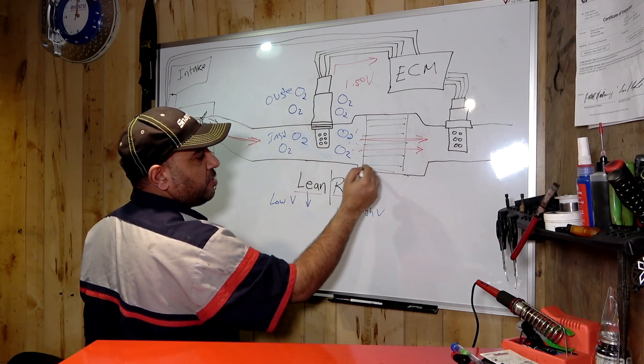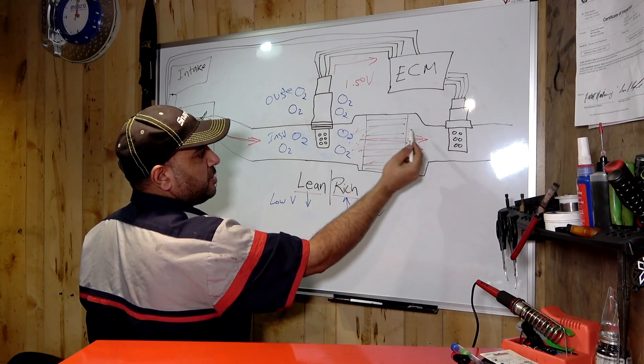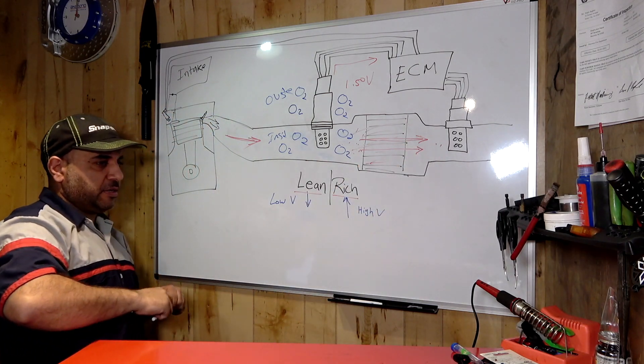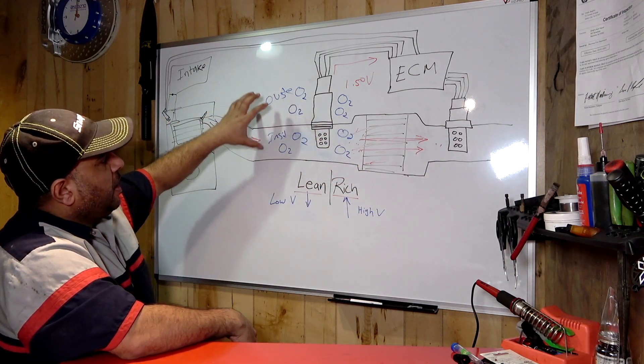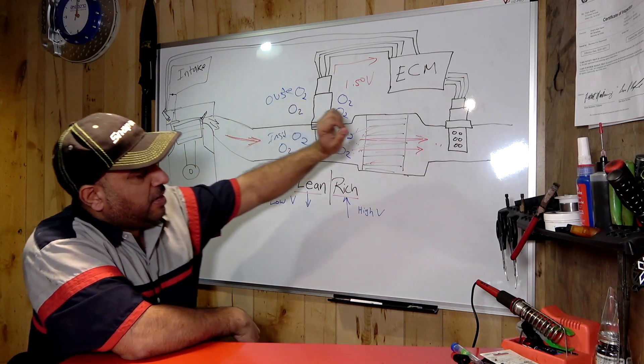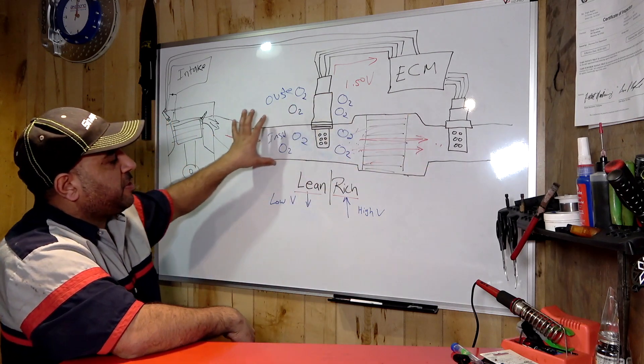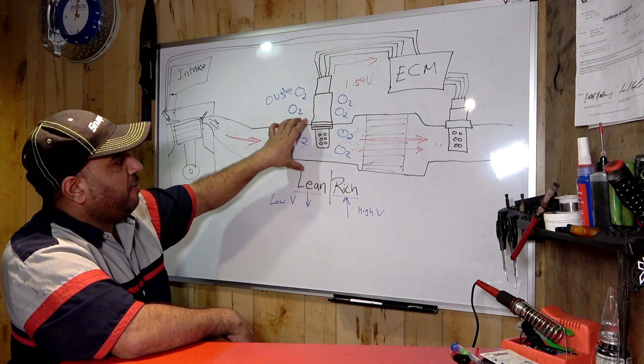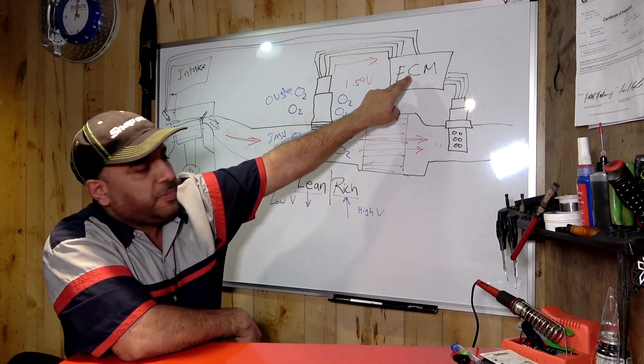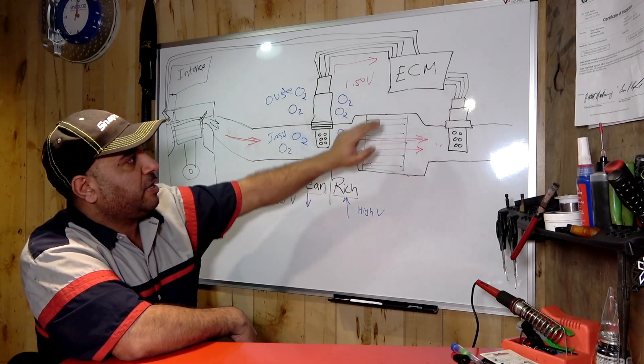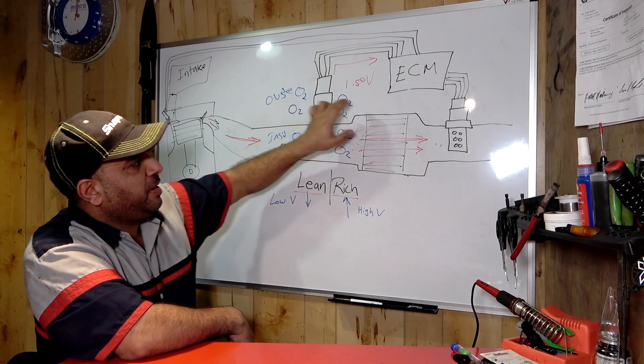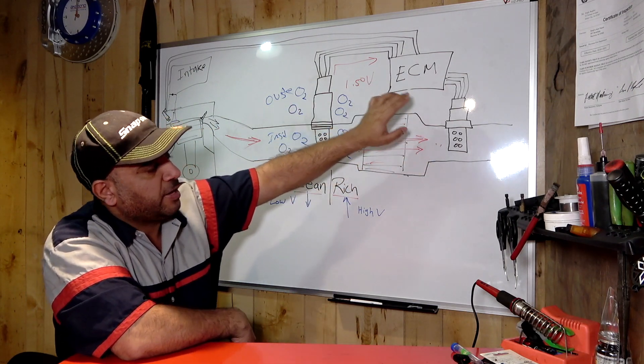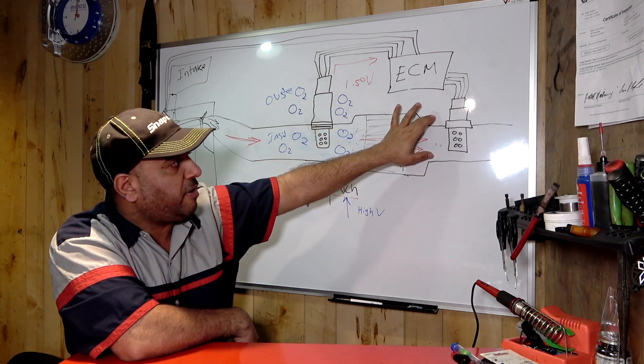The second sensor there is gonna determine how much oxygen here and how much is over there. It's gonna determine emissions, compare it with this one to that one. The brain here, the ECM engine control module, determines the signal from here and signal from here.